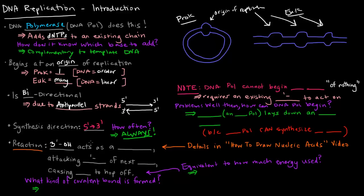The reaction that it catalyzes is the action in which we have the 3' OH group of an existing strand. It acts as a nucleophile attacking the 5' phosphate group of the next DNTP, causing a pyrophosphate, an organic pyrophosphate, to hop off.